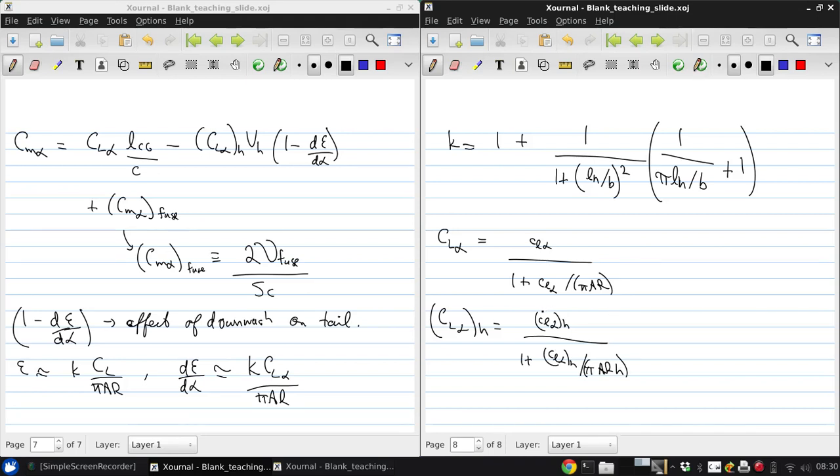These airfoil lift slopes can be obtained from experiments, from calculations, for example from X-foil, or just using thin airfoil theory. Now, these show the simplest possible use of lifting line theory to get these lift slopes. But compressibility and sweep effects can be included using the same approximations that we used earlier in the course.